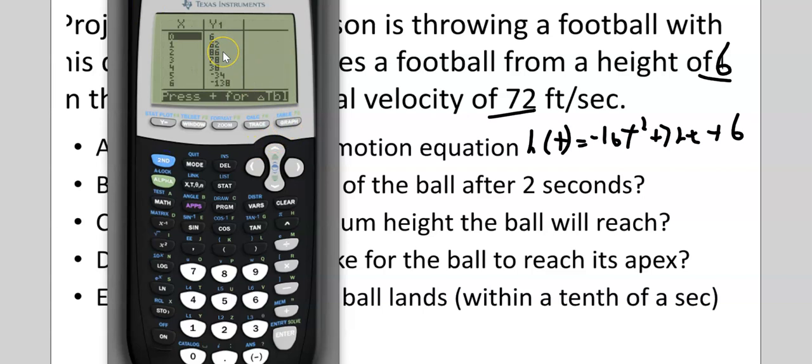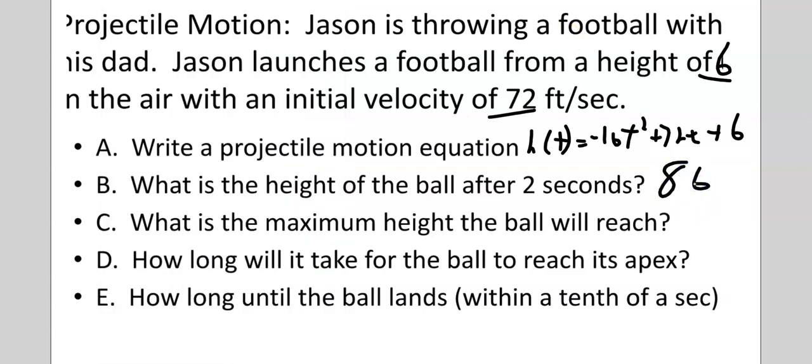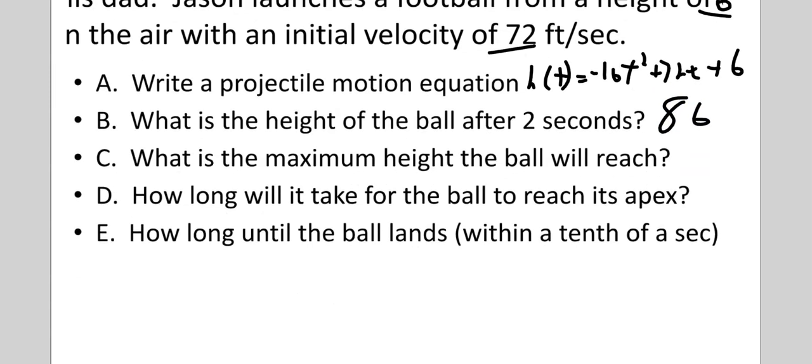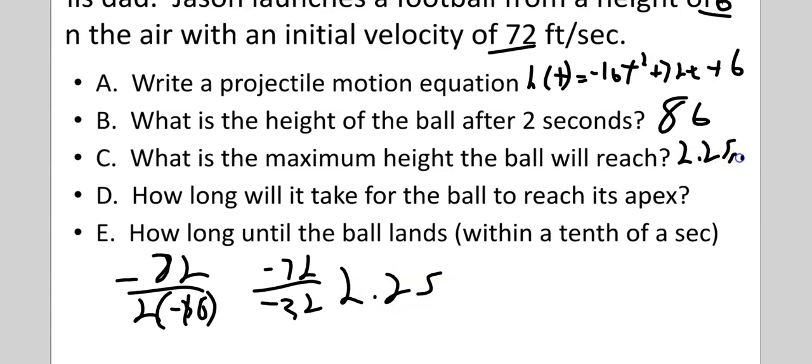Where is it going to be after two seconds? 86 feet. What's the maximum height? So, we're going to do opposite of B over 2A. So, negative 72 over negative 32. And if we divide that in the calculator, that's 2.25. So, this is one why you have to be able to do this because you're not going to be able to always find this. 2.25 seconds. Sorry. That's the next one. Whoops. Got ahead of myself. That's how long it will be.